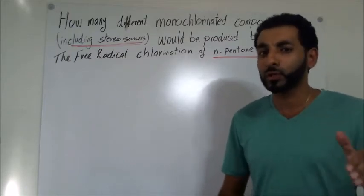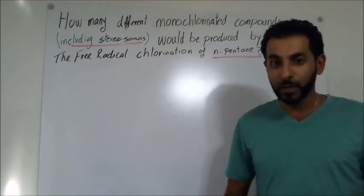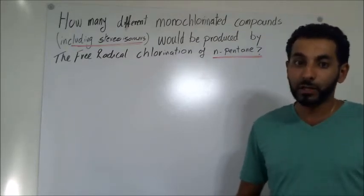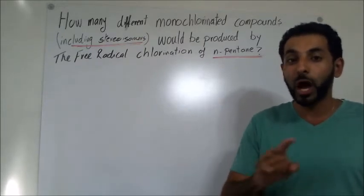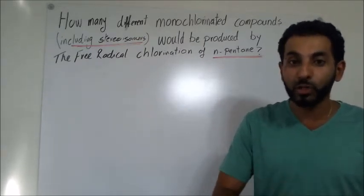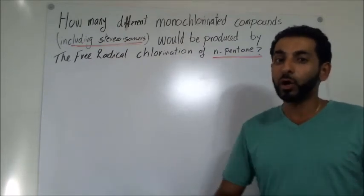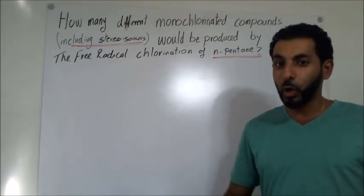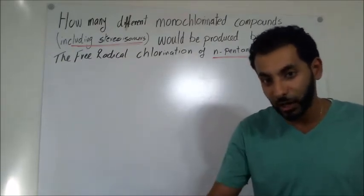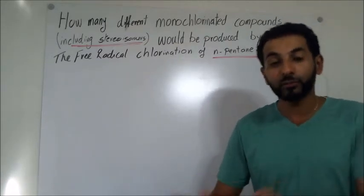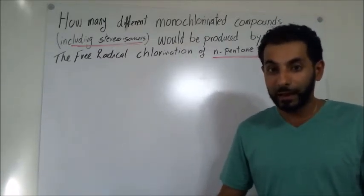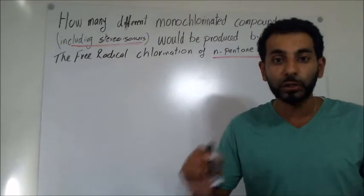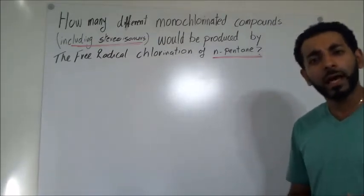That's why we choose to work with chlorine and bromine only. If we are using bromine, the reaction will be very selective — bromine will substitute the most stable hydrogens on the alkane, favoring secondary hydrogens over primary. But if we use chlorine, the reaction will happen at any of the hydrogens, so chlorine will substitute any hydrogen on the alkane.